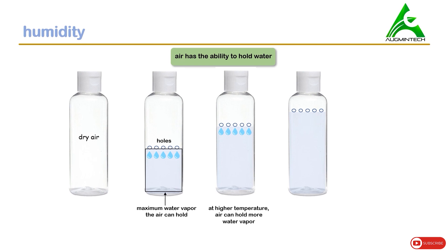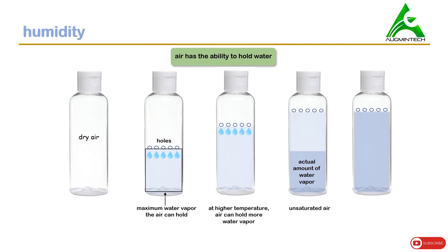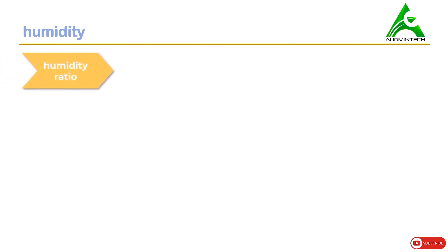In the first three examples, if you see any blue region, it tells us about the capacity to which the air can hold water, but there is no actual water vapor present — it just shows the maximum amount the air can hold. In the last example, there is some actual amount of water vapor present. This kind of air is known as unsaturated air, because the air is not holding moisture up to its maximum capacity. Air which contains water vapor up to 100% capacity is known as saturated air.